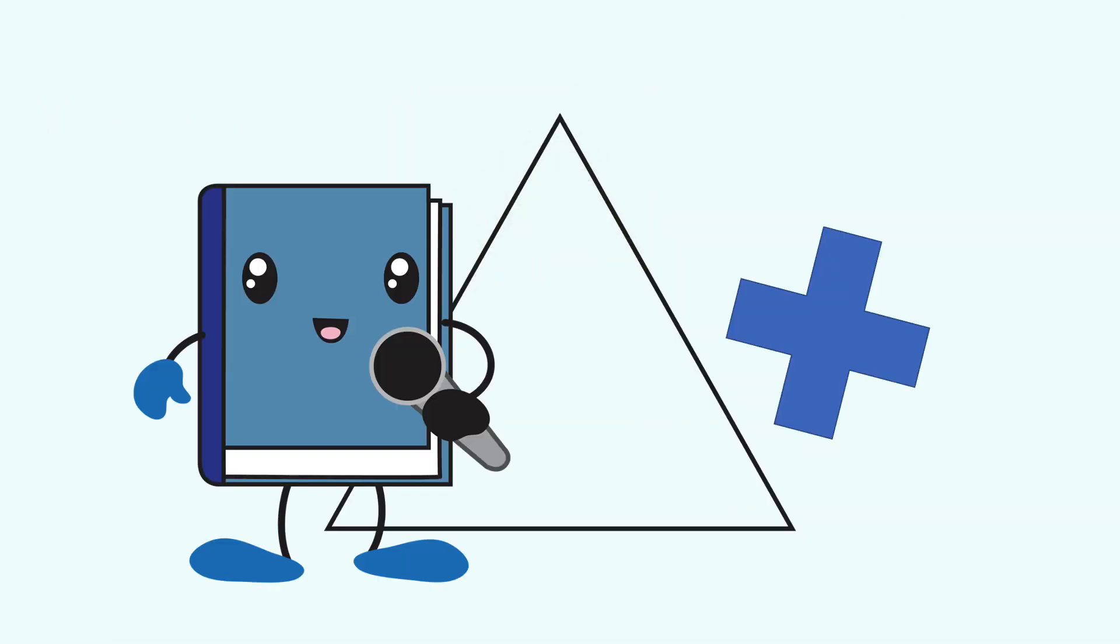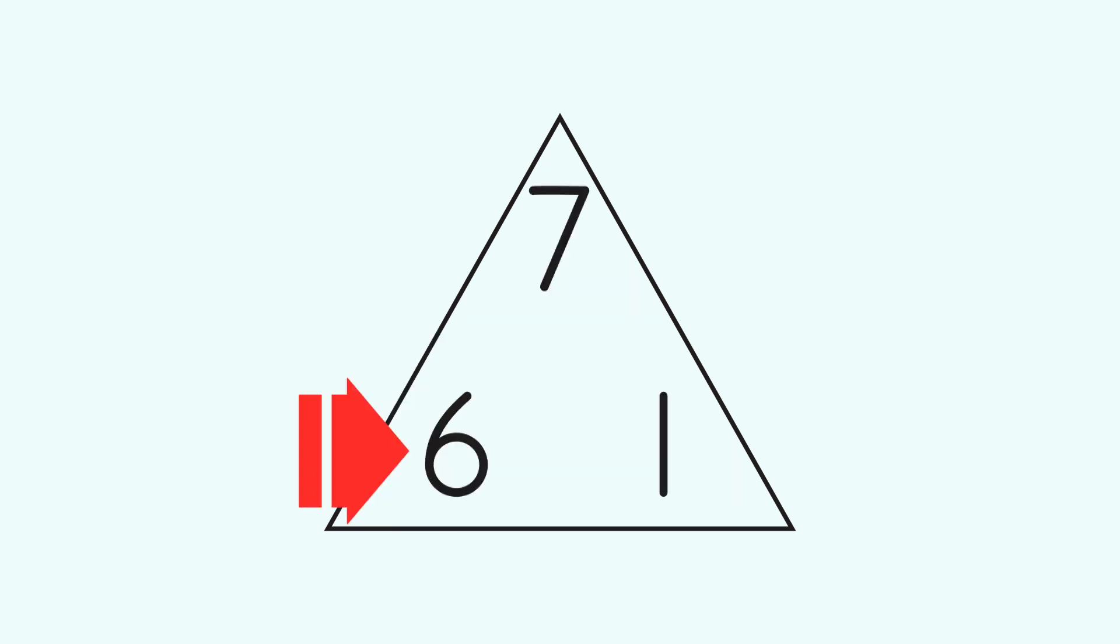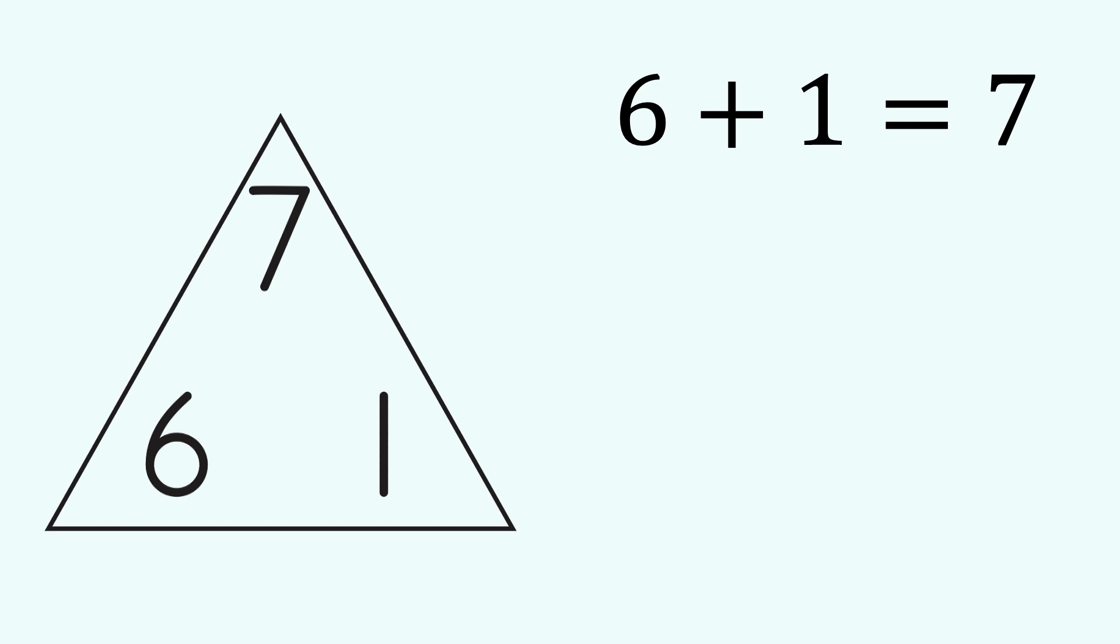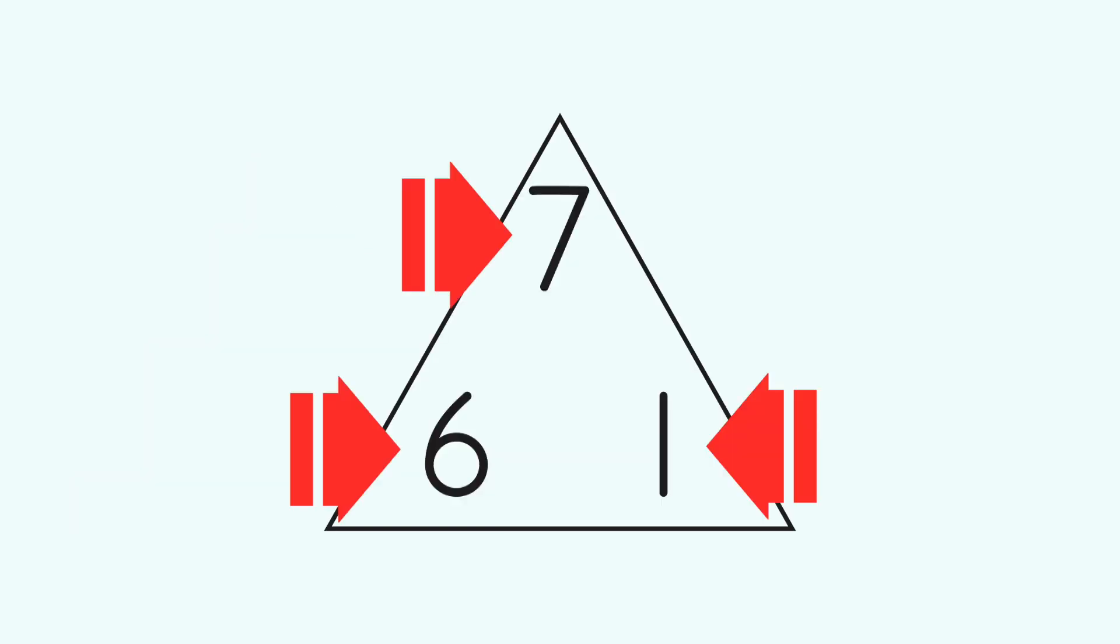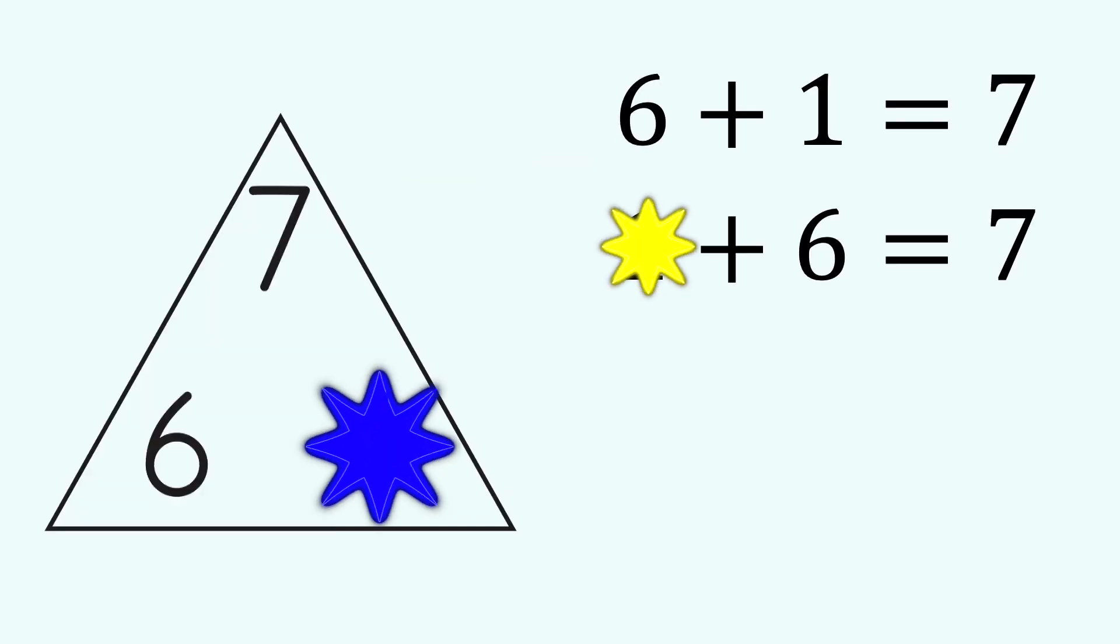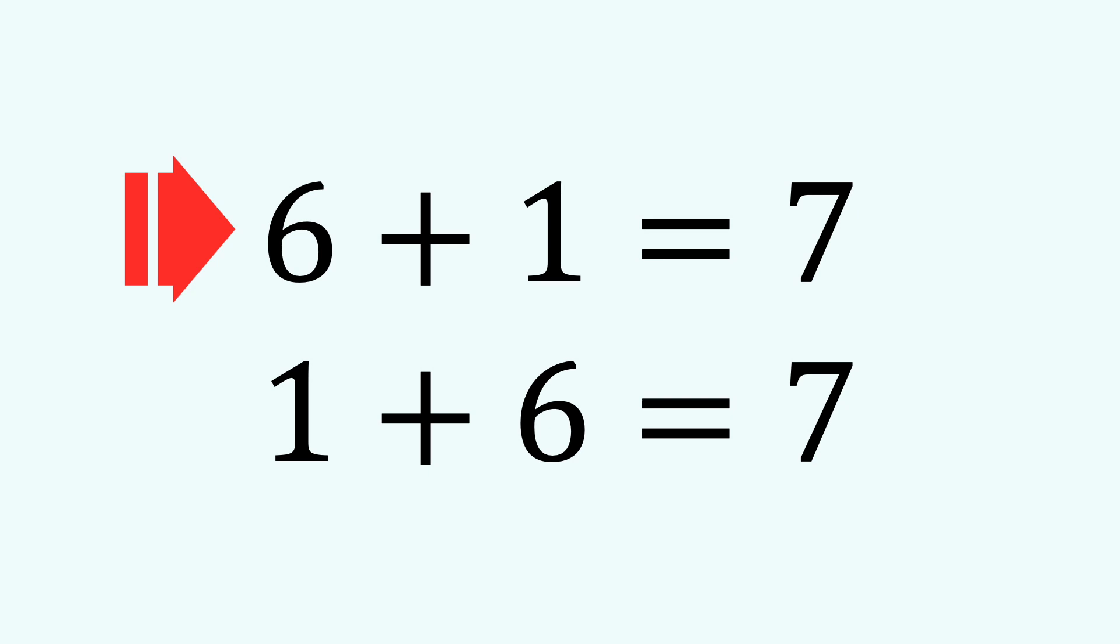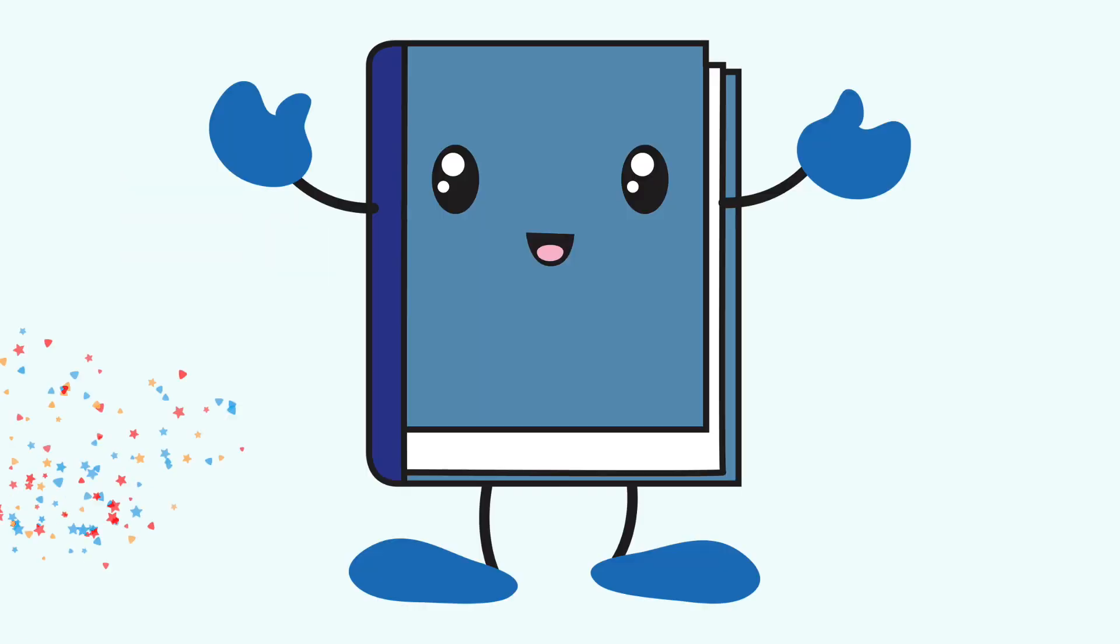Let's do addition first. Start at the bottom, go over and up. 6 plus 1 equals 7. Start at the other side and do the same thing. 1 plus 6 equals 7. We found our two addition facts: 6 plus 1 equals 7, and 1 plus 6 equals 7. Super job!